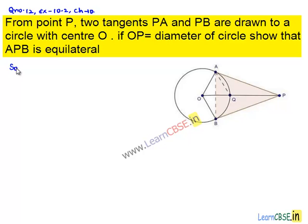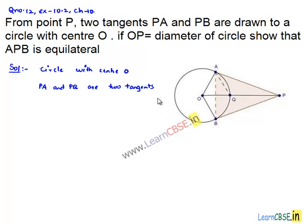Coming to the solution, here a circle is given with center O, in which two tangents PA and PB are drawn to circle from point P. The distance between center O to point P is diameter of the circle, that is OP is equal to 2 times the radius. Let R be the radius.